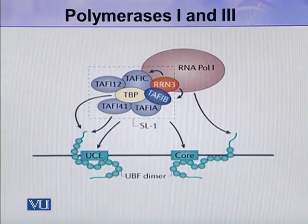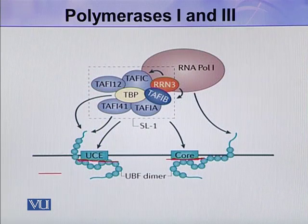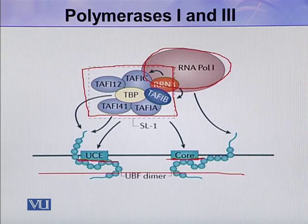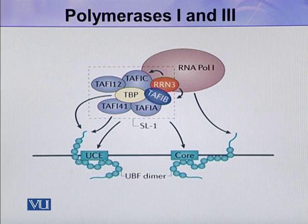Here you can see the core element and the UCE element in the promoter. This is RNA polymerase 1, and this is SL1 which contains many TAFs, TBP, and some other factors. This is the transcription machinery for polymerase 1.